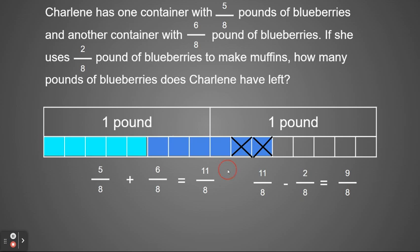I hope that was helpful. Another way you could write nine eighths, and we'll talk about that in further lessons, is it would be one whole and one eighth. As you can see, she has one whole pound and one eighth of a pound left.